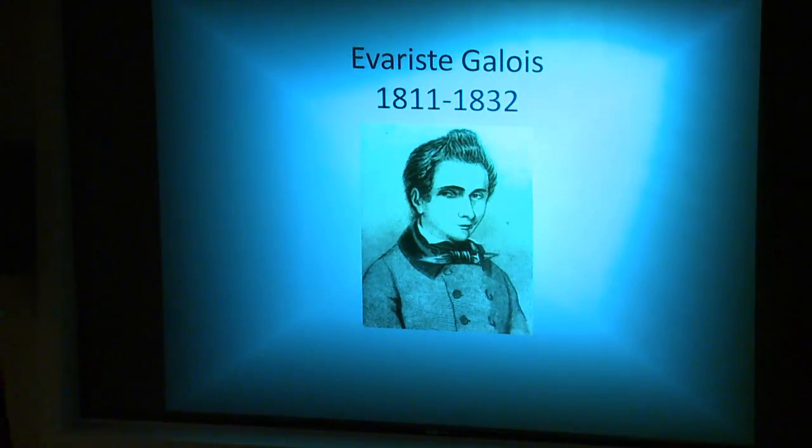Not long after Abel's theorem had surfaced, Évariste Galois would create a new branch of algebra known as Galois theory. He would make a connection between the putative solutions and the permutations of these solutions. Galois was able to find the code of an equation, the Galois group of the equation, and determine from it its properties whether it was solvable by formula or not.